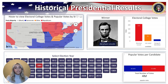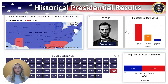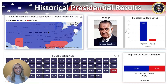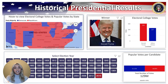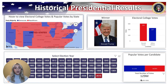voter turnout throughout time. We go to 1864 and see 4 million votes, we go to 1964 and see 70 million votes, and finally we go to 2016 and see 129 million votes.